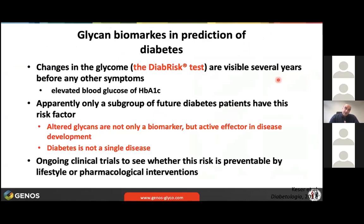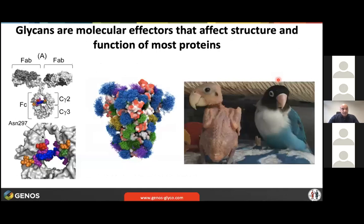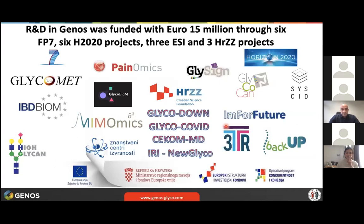Diabetes is not a single disease — it has multiple pathways — and we think glycosylation changes are relevant to a pathway that also associates with hypertension and metabolic disease. We have a biomarker visible several years before any other symptoms — when glucose is normal and HbA1c is normal, just the glycans are altered. This seems relevant for a subgroup of future diabetes patients where glycosylation is not only a biomarker but an active effector in disease development. We are currently trying to set up trials to see whether changing the plasma glycome composition will affect future diabetes risk. To remind you at the end: if you want to understand biology, you have to include glycosylation in your studies — otherwise you are just looking at this bird without feathers, and you cannot understand that birds can fly. Thank you.